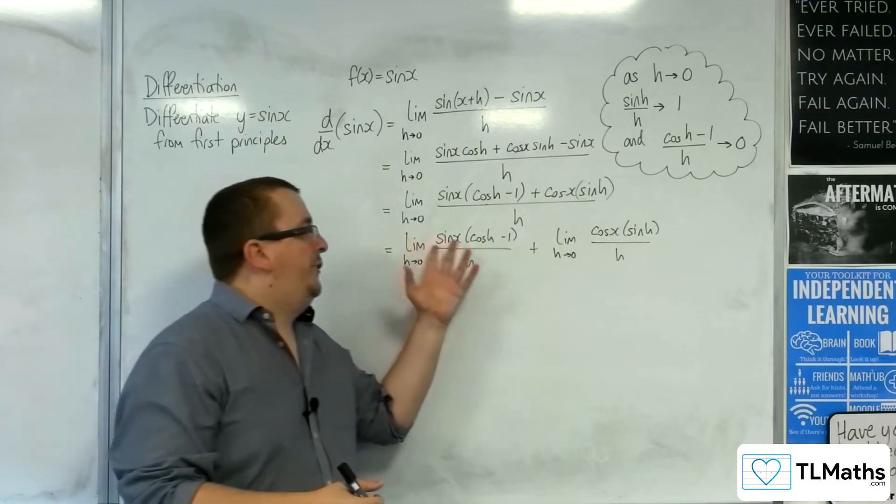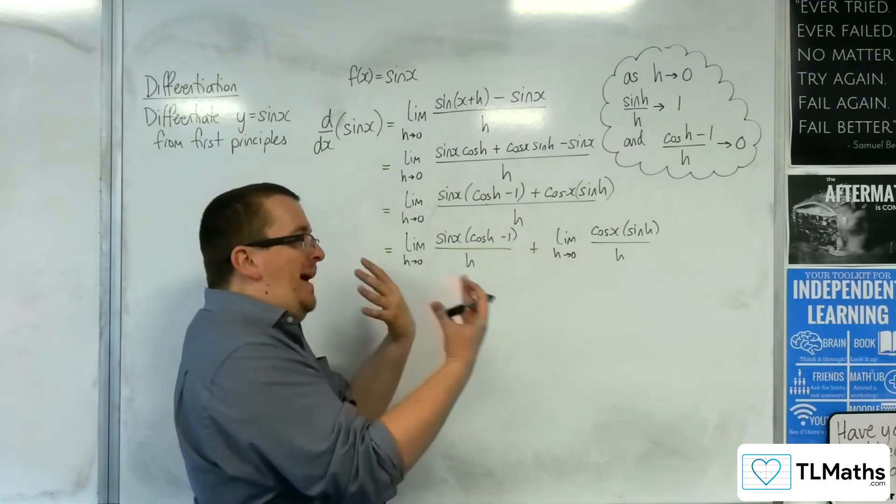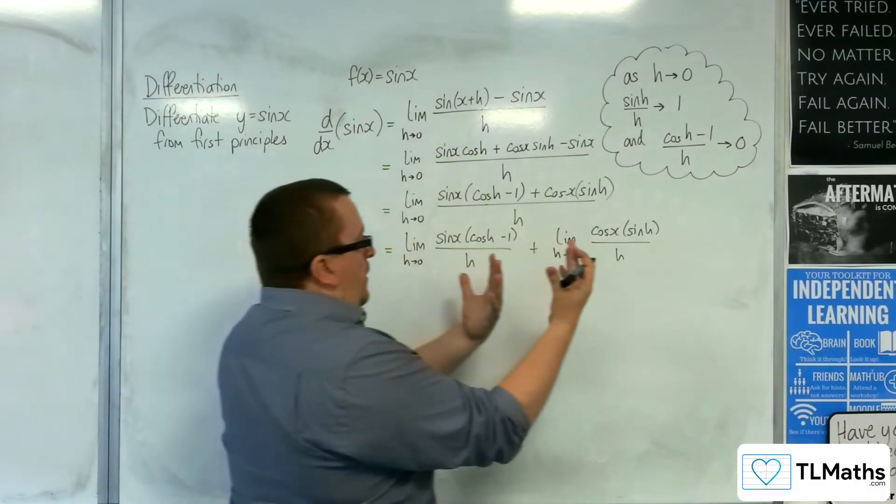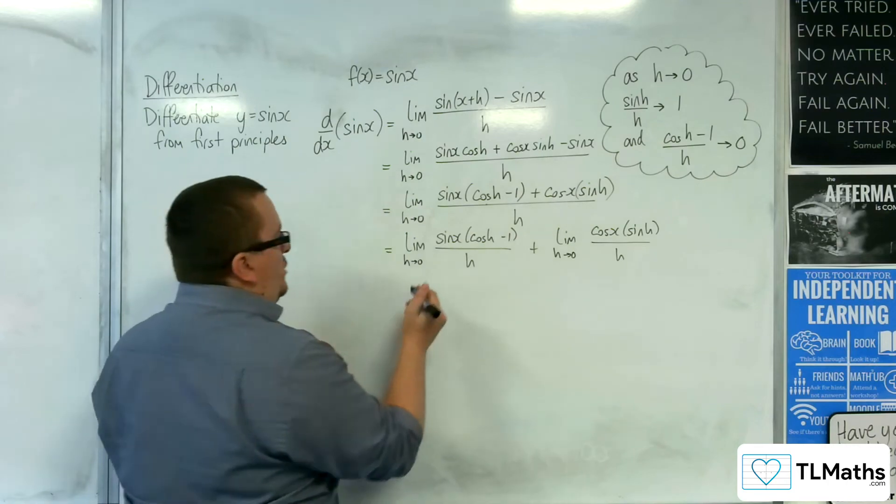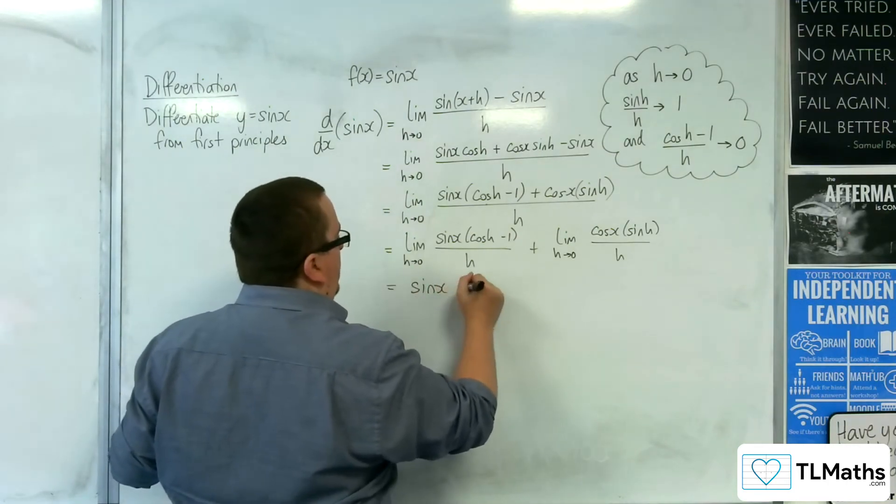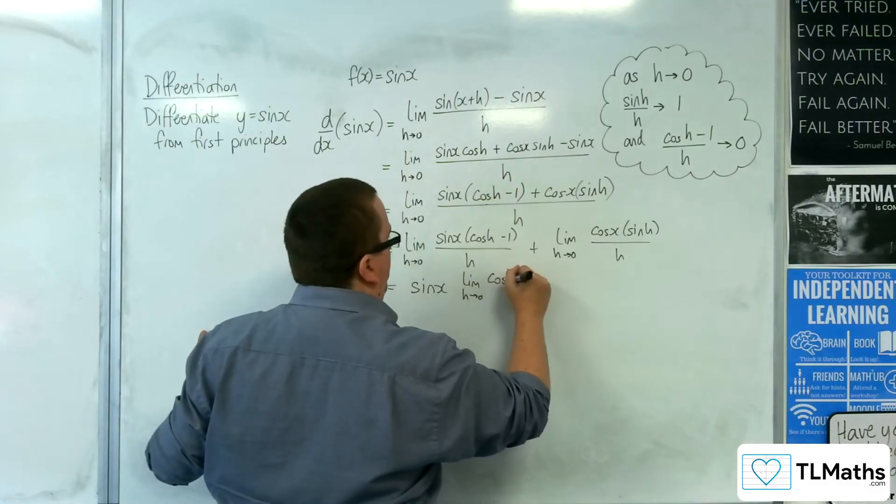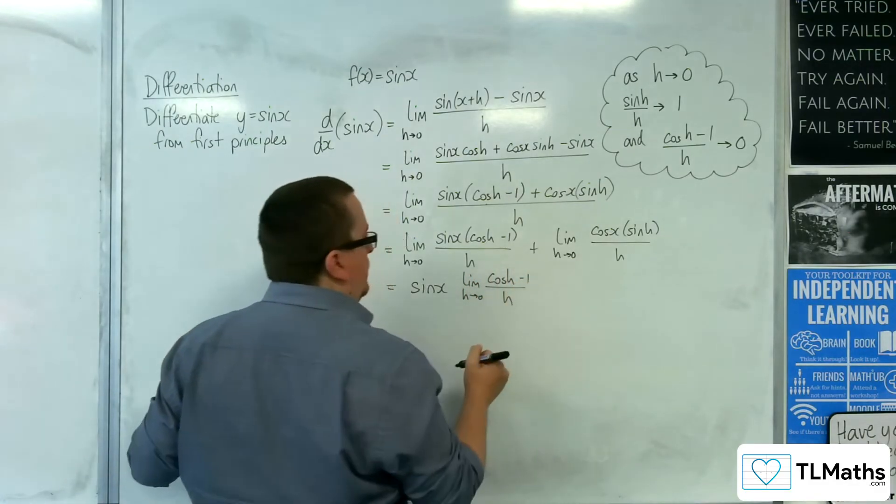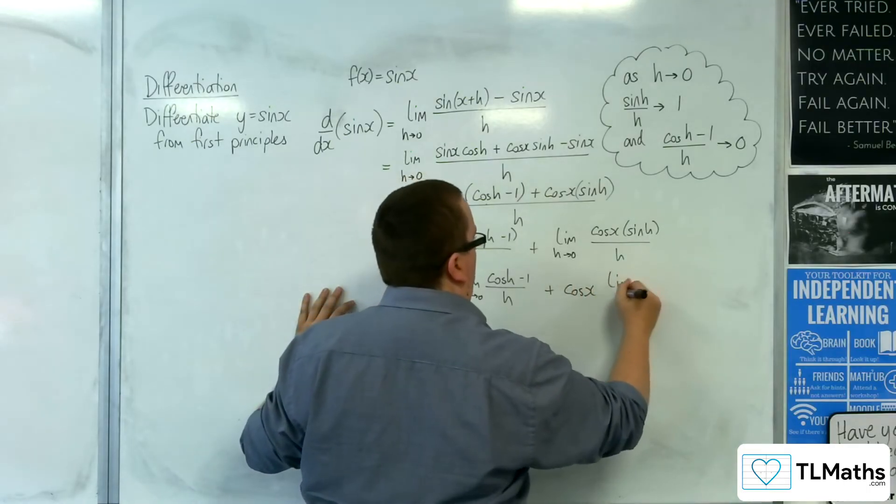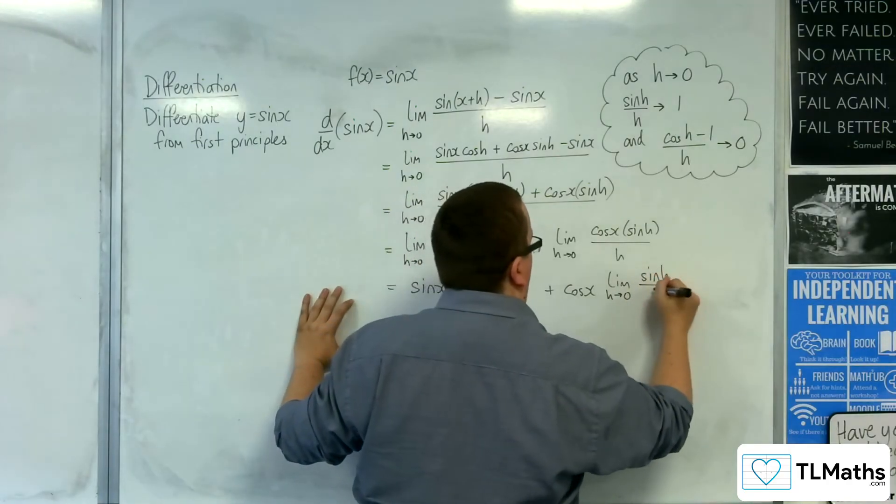Because the sine x and the cosine x don't involve h, you can take them outside of the limit - there's no effect in doing that. They're just like multipliers or coefficients. So we'll have sine x times the limit as h tends to 0 of cosine h take away 1 over h, plus cosine x times the limit as h tends to 0 of sine h over h.